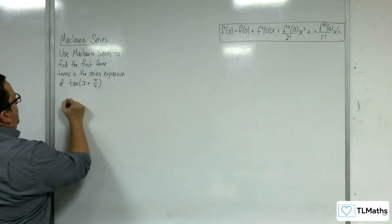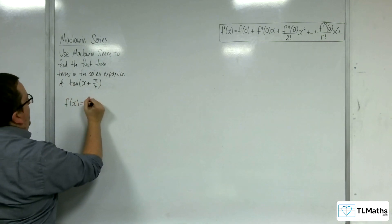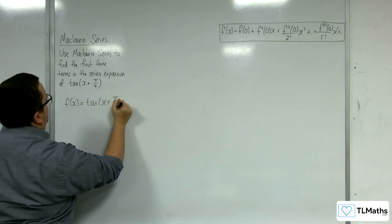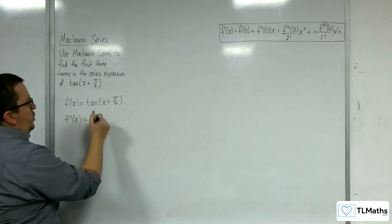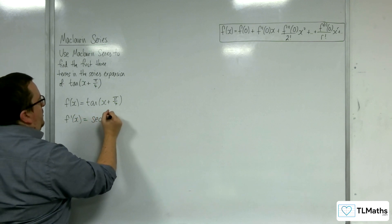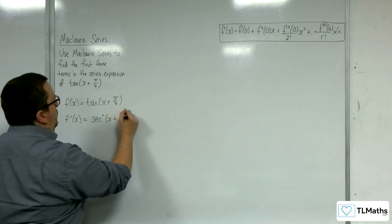So f of x is tan of x plus pi over 4. So I need to differentiate that. Now tan differentiates to sec squared, so this would be sec squared of x plus pi over 4.